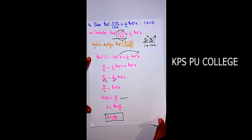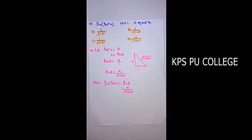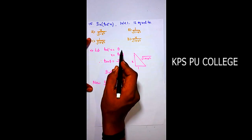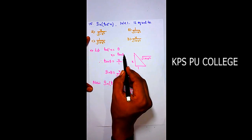Question 15 (MCQ): sin(tan⁻¹(x)), where |x| < 1, is equal to: option (a) x/√(1-x²), option (b) 1/√(1-x²), option (c) 1/√(1+x²), option (d) x/√(1+x²).